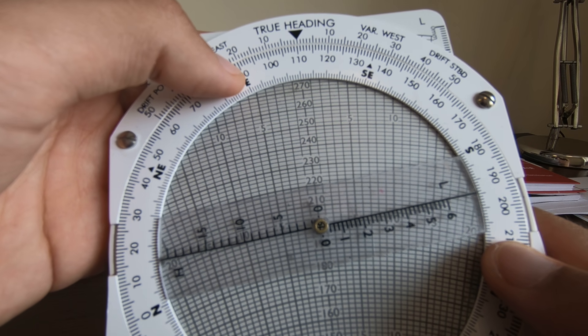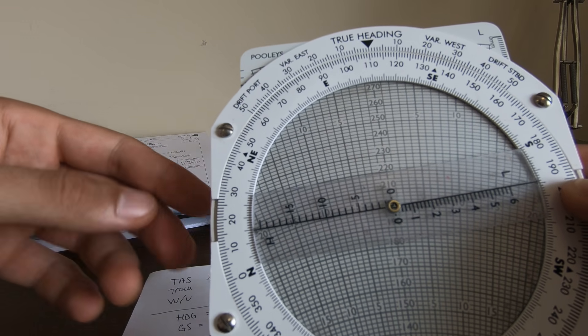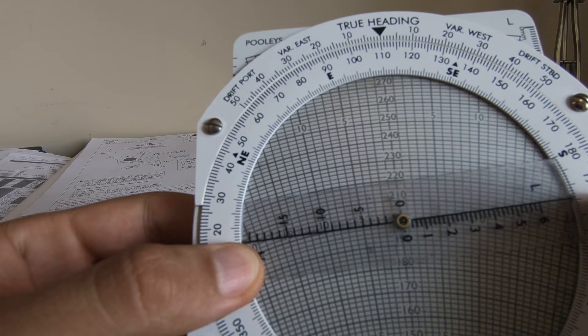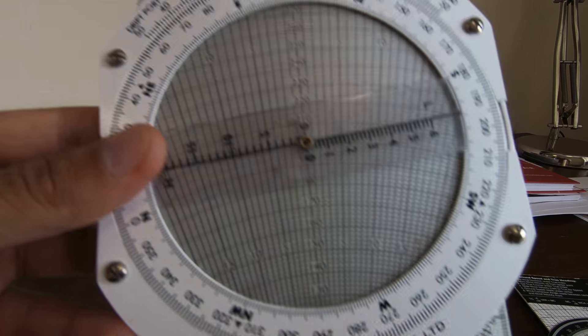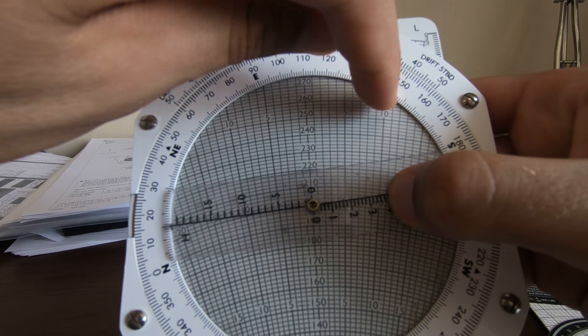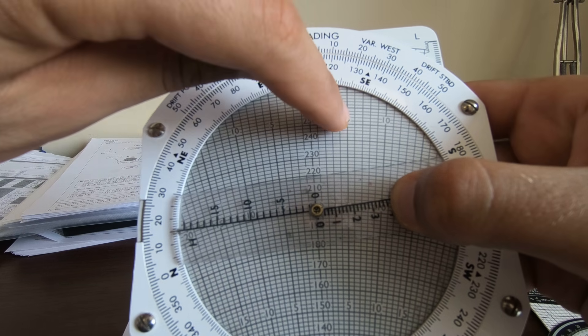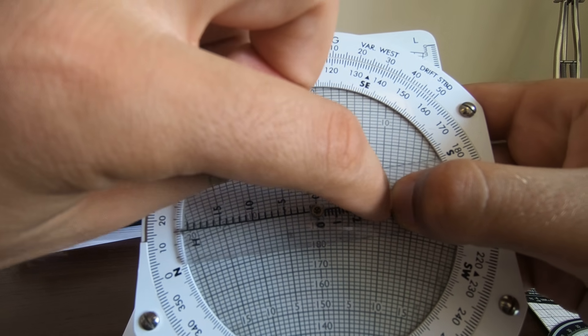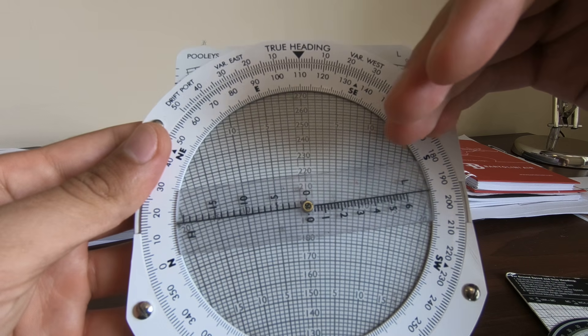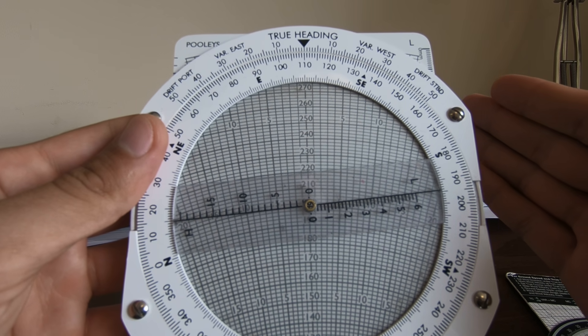Wind is from 015, so we have here 015, and to be exact we have 40 knots, so it's right here. As you can see, this is about 10 degrees drift, and each line is 1 degree, so 5, 6, 7, 10, 11. So we have 11 degrees drift to the right. We're drifting right, that means heading should be to the left.